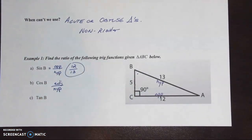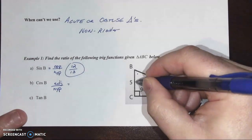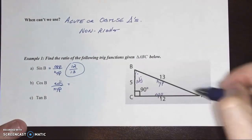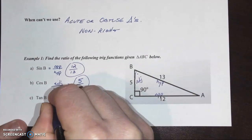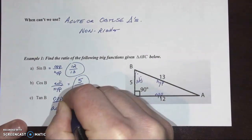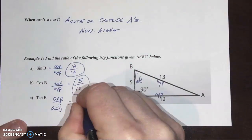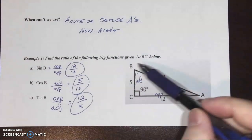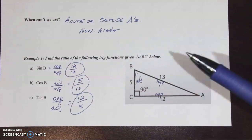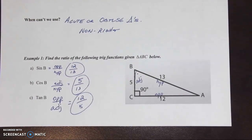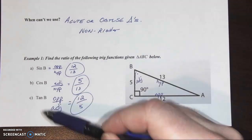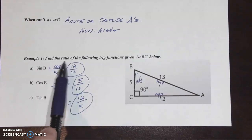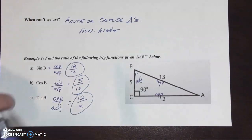Cosine of angle B is adjacent over hypotenuse — that's the CAH in SOHCAHTOA. From angle B, this leg right next to it is the adjacent, so we have 5 over 13. Lastly, tangent — the TOA part of SOHCAHTOA — is opposite over adjacent, giving us 12 over 5. Very simple test of your knowledge of the ratios. Sometimes students overthink this later in the unit, but we're just asking for the ratio: 12 over 13, 5 over 13, 12 over 5.